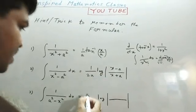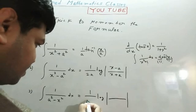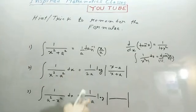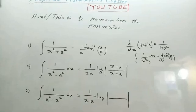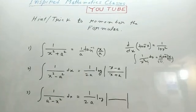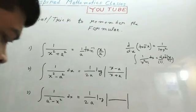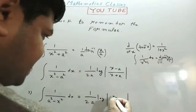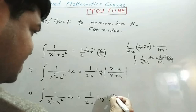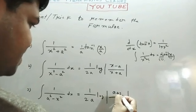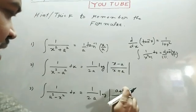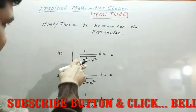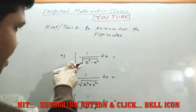You can also remember, if you forget the formula, this number 3, then for 1 upon a square minus x square dx, you can simplify, take common minus and this is x square minus a square dx. And now you can use this formula for finding the formula of this.